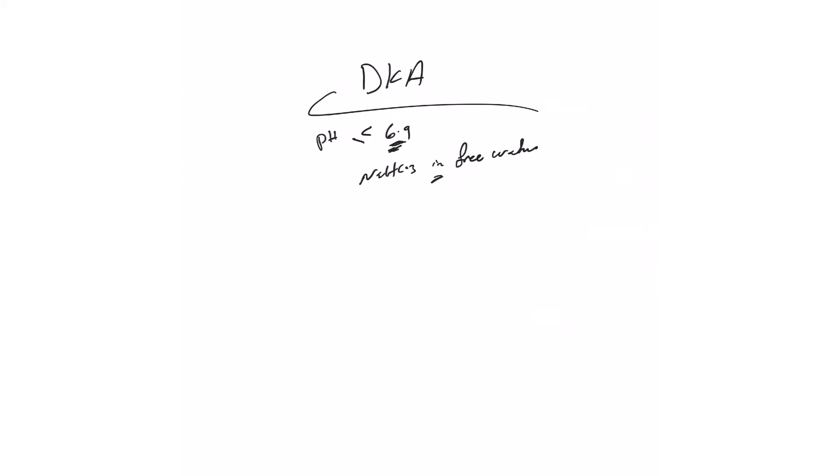The other indication in DKA is severe hyperkalemia, especially if it's associated with acidosis. That's when you give it to lower the potassium level. We'll come to that in a separate video, but that's another indication.